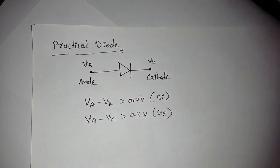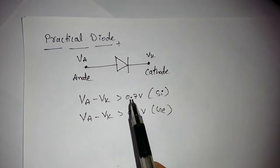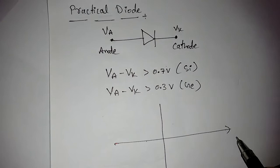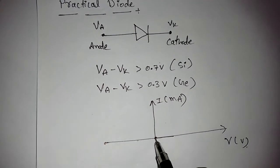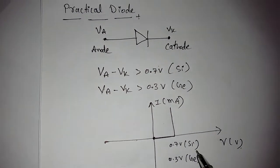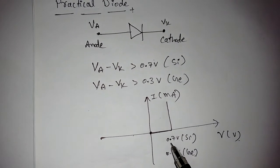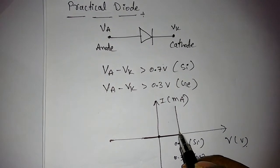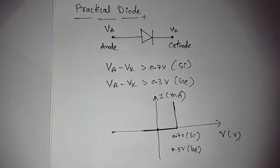As a simple analogy, when you want to turn on a switch you need to apply some force. In the ideal diode that threshold was zero, but in the practical diode it is 0.7V for silicon and 0.3V for germanium. If you draw the I versus V characteristics, the curve previously started at zero but now it shifts to 0.7V for silicon and 0.3V for germanium. When reverse biased, current is zero, and when forward biased, current increases.